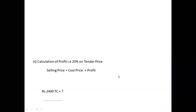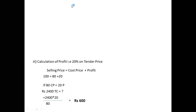Now calculate profit: 20% profit on selling price (tender price). Formula: selling price equals cost price plus profit. Assume selling price = 100 rupees, then profit = 20 rupees, so cost price = 80 rupees. Using proportion: if 80 rupees cost price gives 20 rupees profit, then total cost of 2,400 rupees cost price gives selling price of question mark. Cross multiply: 2,400 × 100 ÷ 80 = 3,000 rupees tender price.